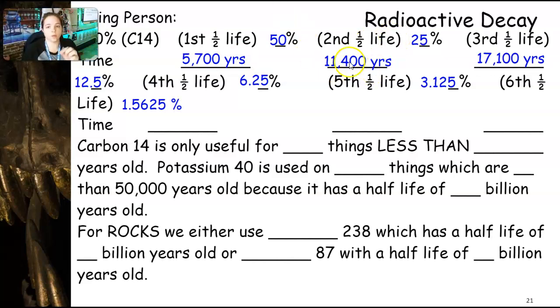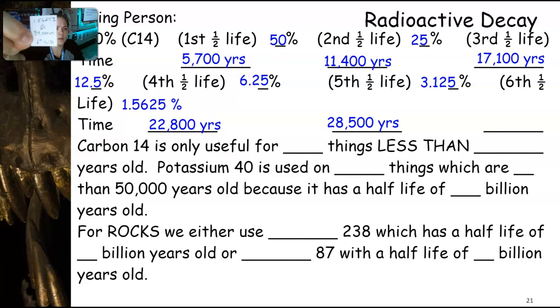All I'm doing is, I know this is my second, so 2 times 5,700, 3 times 5,700, 4 times 5,700, 5 times 5,700. So 28,500 years. And then my sixth one is going to be 34,200 years. And that's just multiplying.